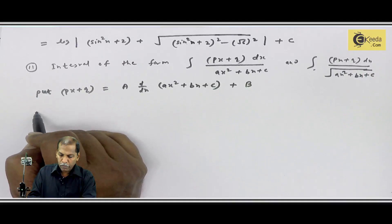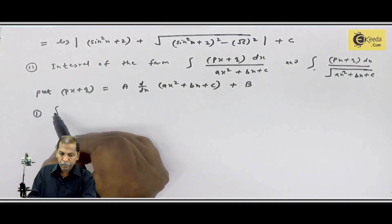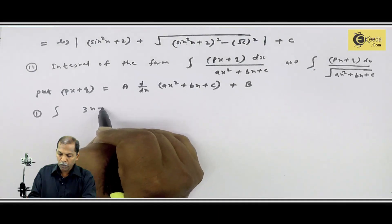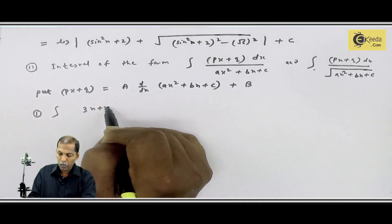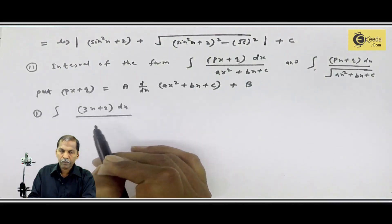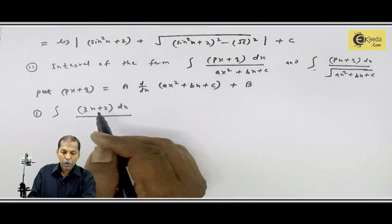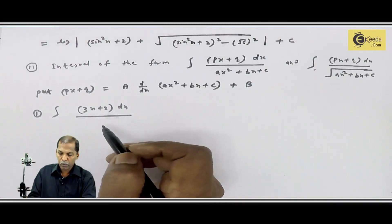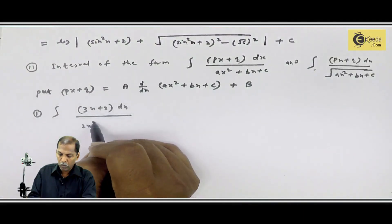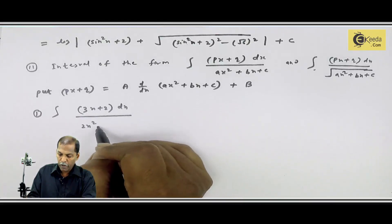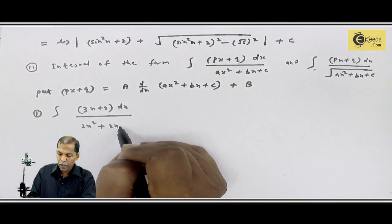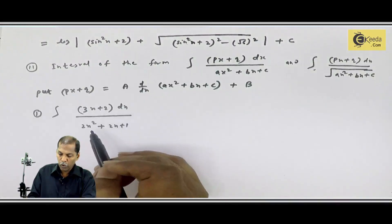The problem is: find the integral of (3x+2)dx upon square root of (2x²+2x+1).